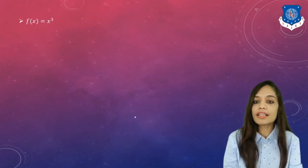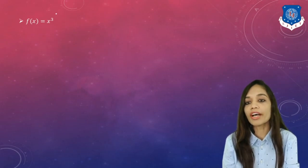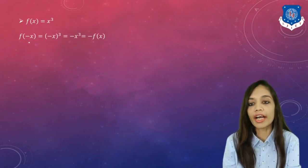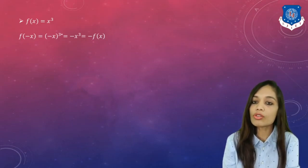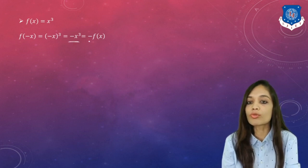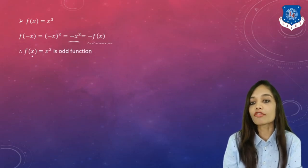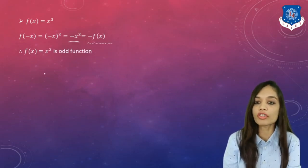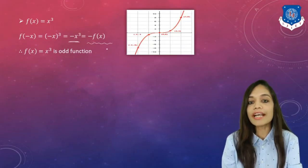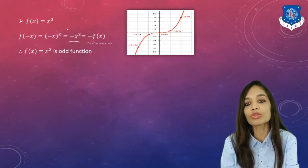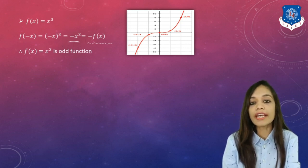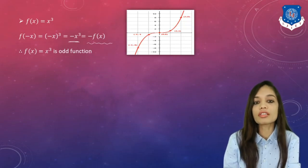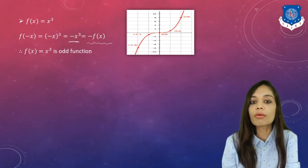Next, let us see the odd function x³. We replace x by −x: f(−x) = (−x)³ = −x³ = −f(x). Hence f(x) = x³ is an odd function. Looking at the graph of f(x) = x³, you can see that it is symmetric about the origin. Hence graphs of odd functions are always symmetric about the origin.